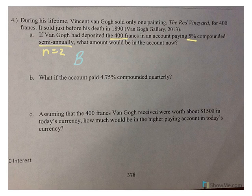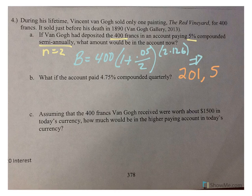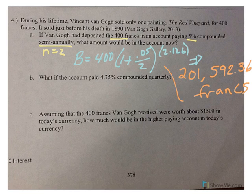So, for my formula, balance equals 400 francs, 1 plus .05 divided by 2, raised to the 2 times 126 power. Right, because we decided 126 years. So, I'm going to need some space. We have 201,592.36 francs. That's the answer for letter A.